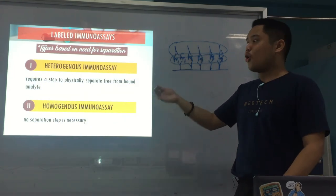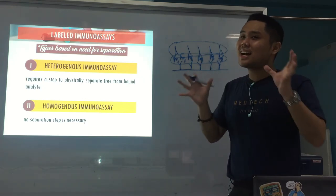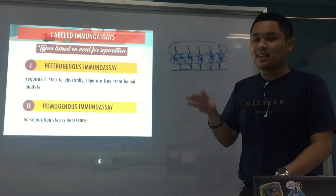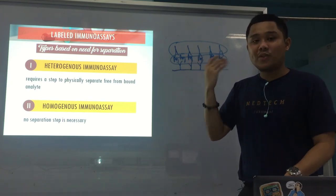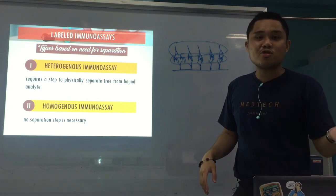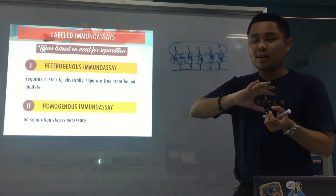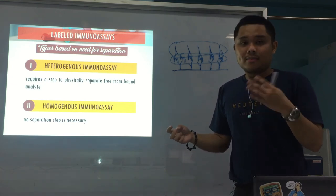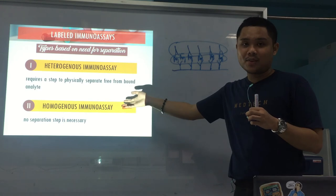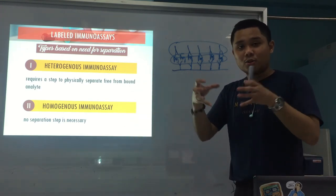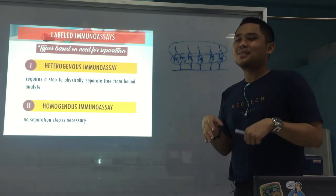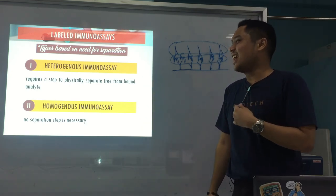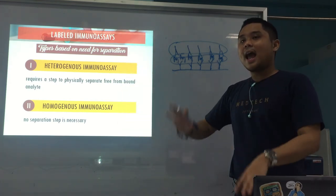For types based on separation, first is heterogeneous — you need to physically separate the free and bound analyte, such as through centrifugation or filtration. It requires a washing step. And then homogeneous — you don't need to separate them. Those are the differences based on separation steps: heterogeneous and homogeneous.